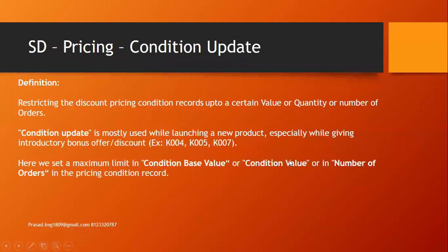The condition update concept is a very important concept, especially for newly launched products. Condition update means restricting the discount pricing condition records up to a certain value, certain quantity, or a certain number of orders. This concept is mostly used while launching a new product, especially while giving introductory bonus offers or discounts — for example, material discount, customer discount, and customer material discounts like standard condition types K004, K005 and K007.